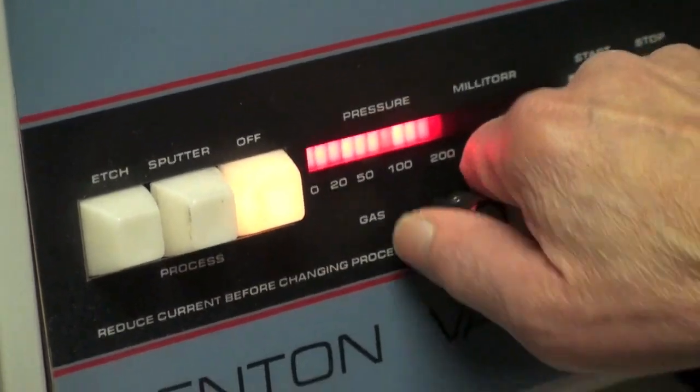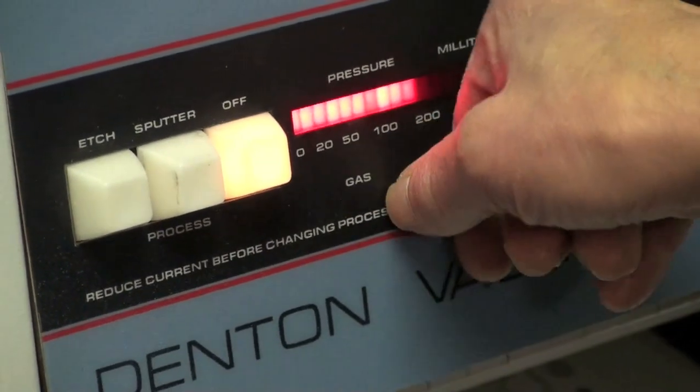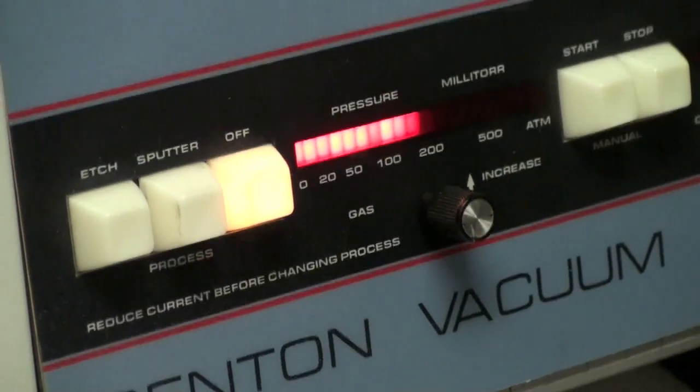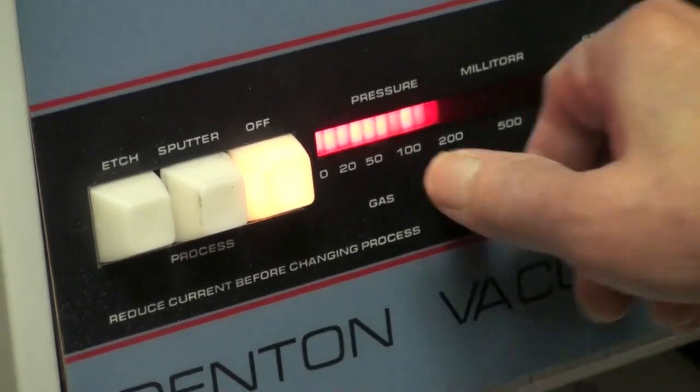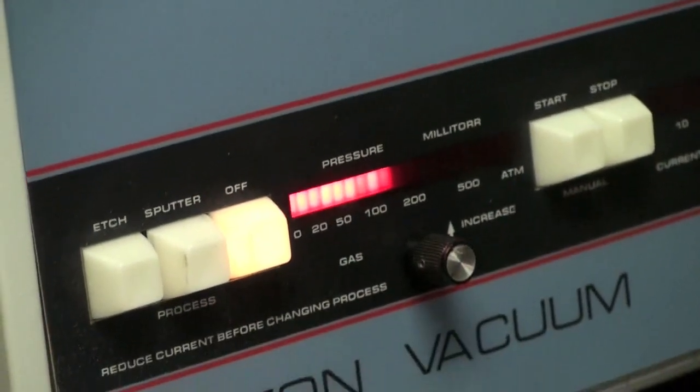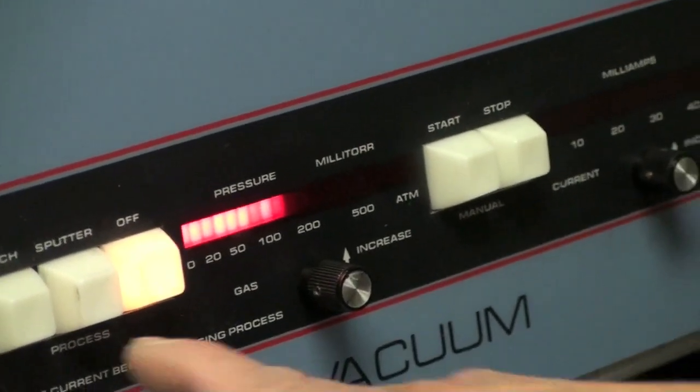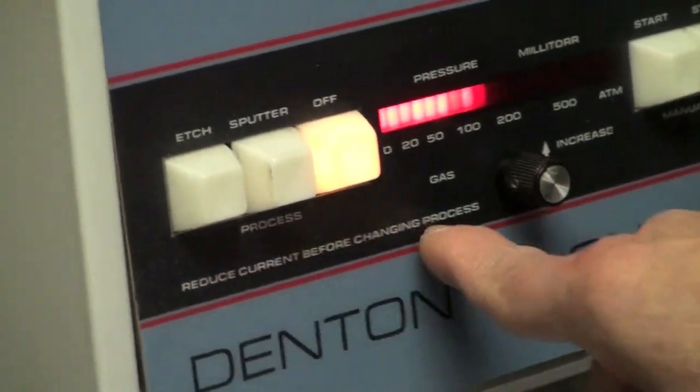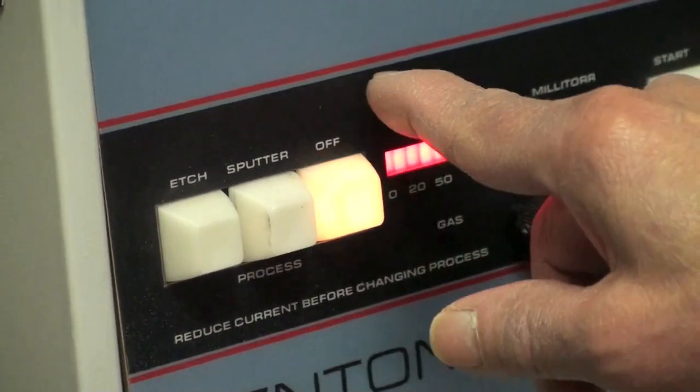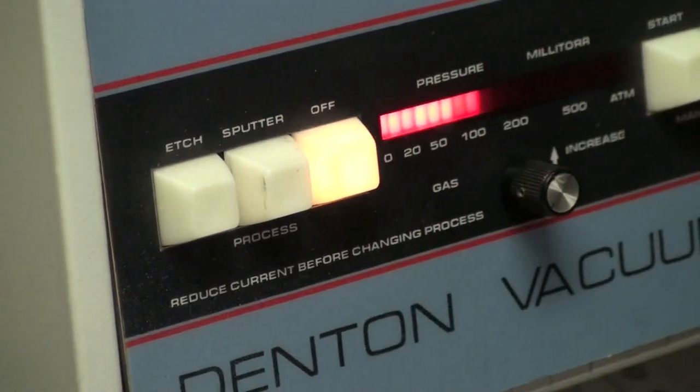This one is off, so it doesn't matter whether you open or close this one. If it's off. These three are solenoid valves. We will use only one, the sputter one and the off one. That's all.